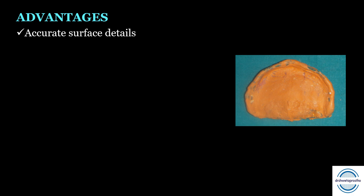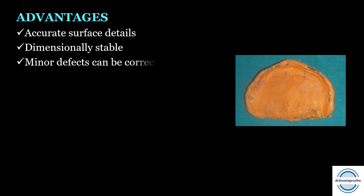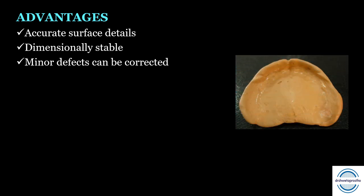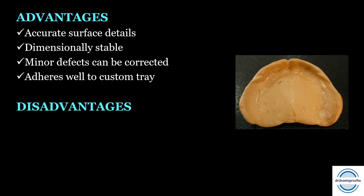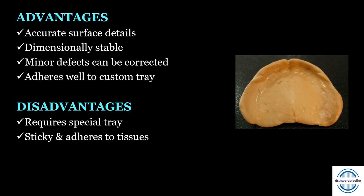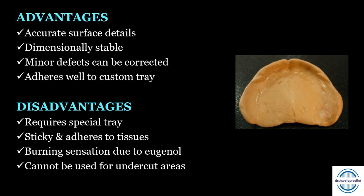Advantages of ZOE impression paste: accurate surface details (hence used as final impression material); dimensionally stable with negligible shrinkage; minor defects can be corrected locally without discarding the whole impression; and it adheres well to the custom tray. Disadvantages: requires a special/custom tray; sticky in nature and adheres to tissues and can be messy (apply Vaseline before use); burning sensation due to eugenol causes tissue irritation; cannot be used in undercut areas due to its rigid/inelastic nature.